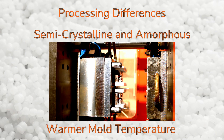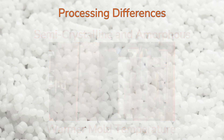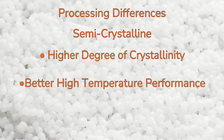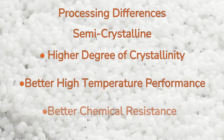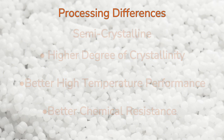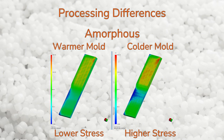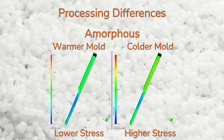Both semi-crystalline and amorphous resins could benefit from being run in a warmer mold, but for different reasons. Semi-crystalline resins will achieve a higher degree of crystallinity — and therefore better performance at higher temperatures and better chemical resistance — if they are run in a warmer mold. When amorphous resins are run in a warmer mold, the molecules relax more before the part solidifies, reducing the residual stress in the part. This will help maintain dimensional stability after ejection from the mold and improve part quality compared to parts run in cold molds.